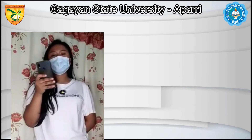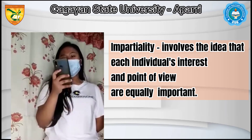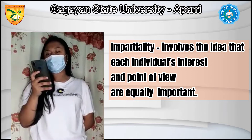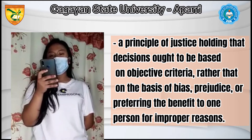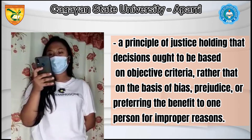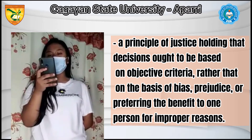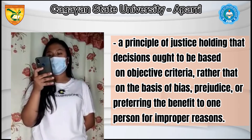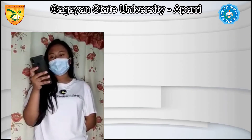Second is Impartiality. What is impartiality? Impartiality involves the idea that each individual's interest and point of view are equally important. Impartiality is a principle of justice, holding that decisions ought to be based on objective criteria rather than on the basis of bias, prejudice, or preferring the benefit to one person over another for improper reasons.